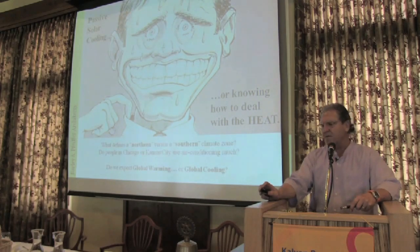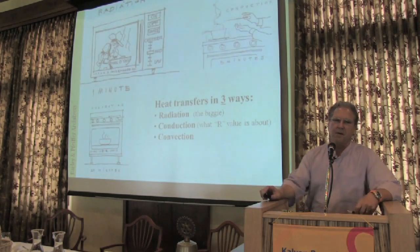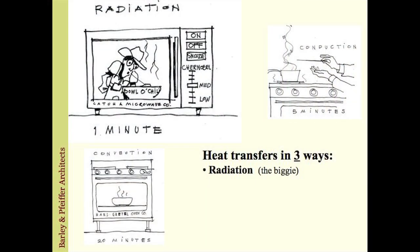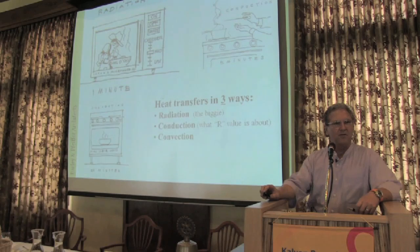So what are some of the big things that affect air conditioning that we might want to play with? Well, the big thing is radiation. Let's go back to high school and remember how heat transfers — it's radiation, conduction, and convection. Radiation is very powerful: that's the microwave oven heating up a bowl of chili in about a minute.